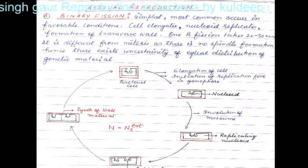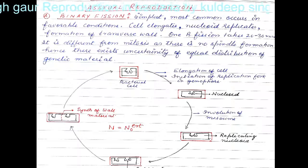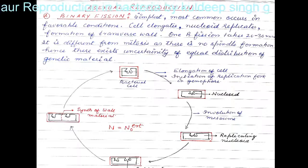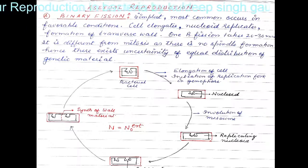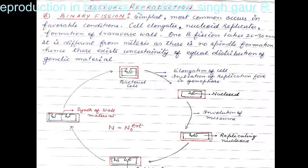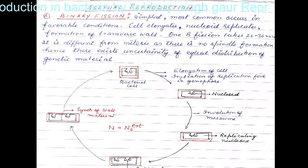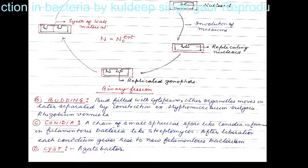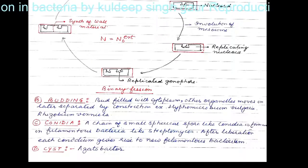One binary fission takes about 20 to 30 minutes. That means whenever bacteria infect our body, one bacterium converts into two bacteria in just 20 minutes. So the first mode was binary fission.